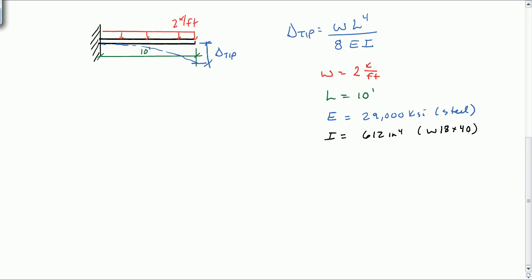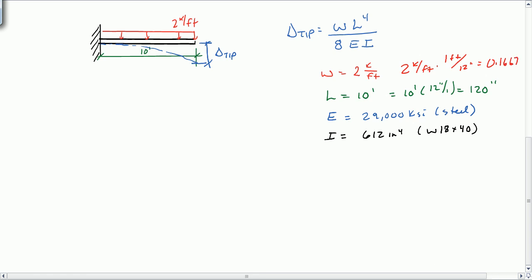At this point, I recommend that you, again, get everything in terms of inches and kips. So our length is equal to 10 feet times 12 inches per foot is 120 inches. And our load, W, is equal to 2 kips per foot times 1 foot divided by 12 inches. And that gives us 0.1667 kips per inch. Now we have everything consistent. We can plug it in. So let's go ahead and do the math.